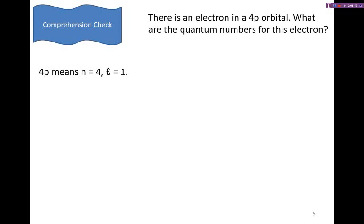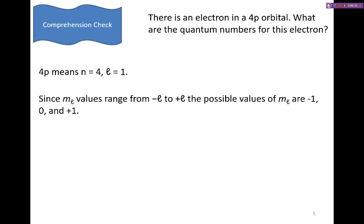Well, a 4p means that n equals 4 and l equals 1. M sub l values range between negative l and positive l, and that means the possible values for m sub l are negative 1, 0, and 1. And m sub s values are only plus 1 half or minus 1 half. And because we're not specifying if it's spin up or spin down, either of those could be correct.